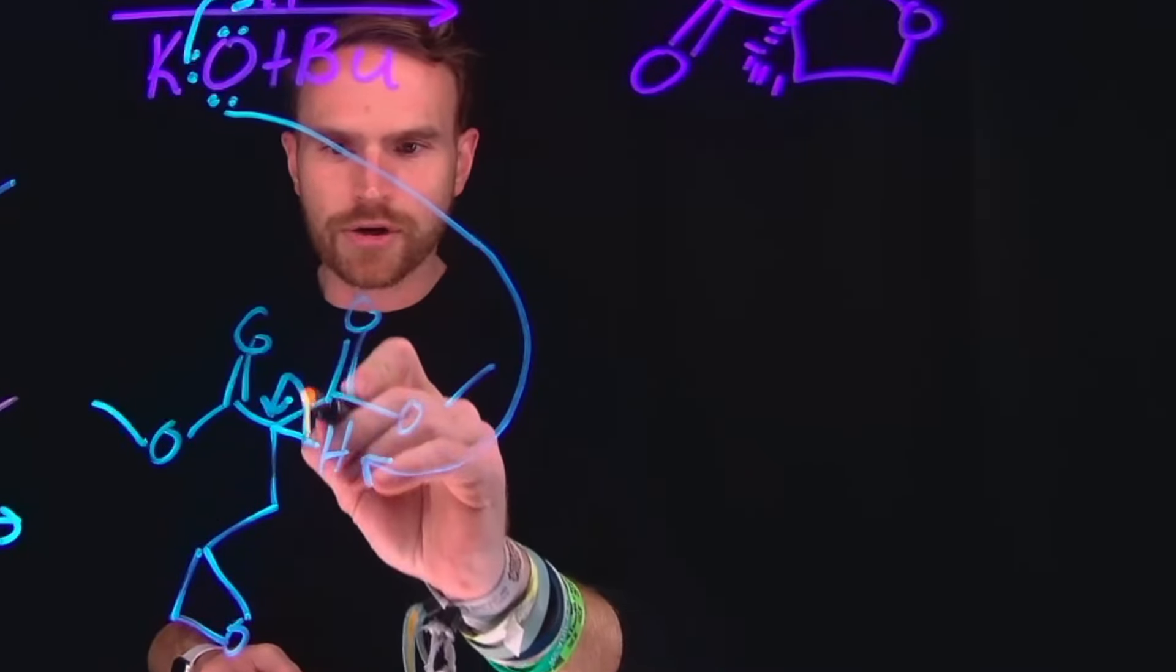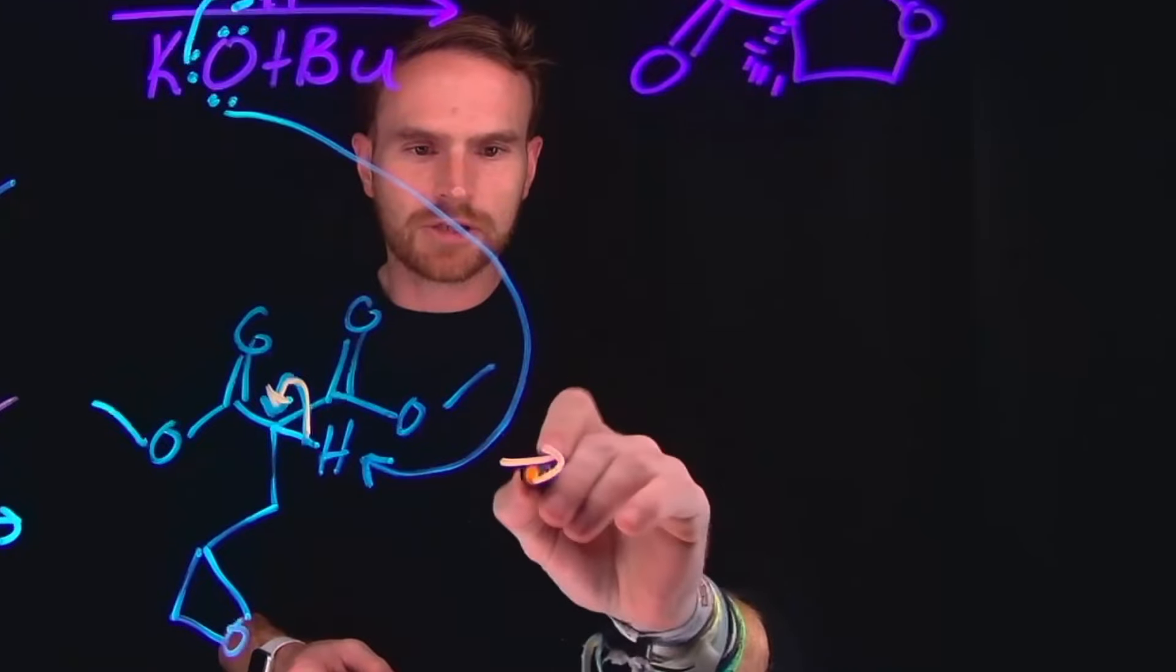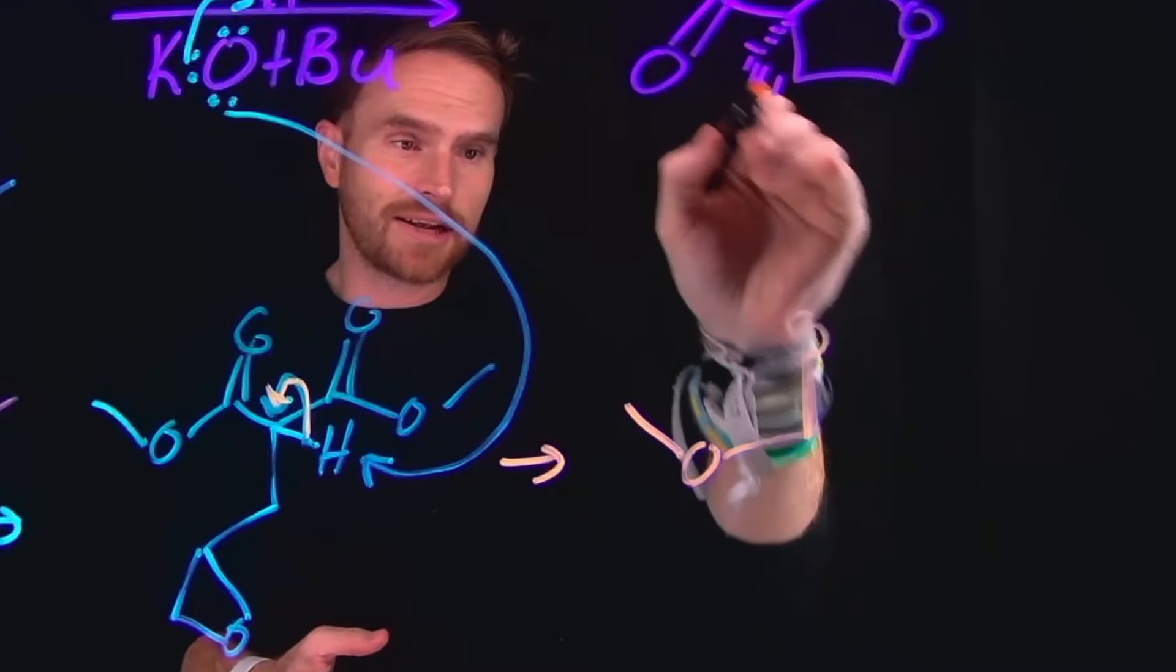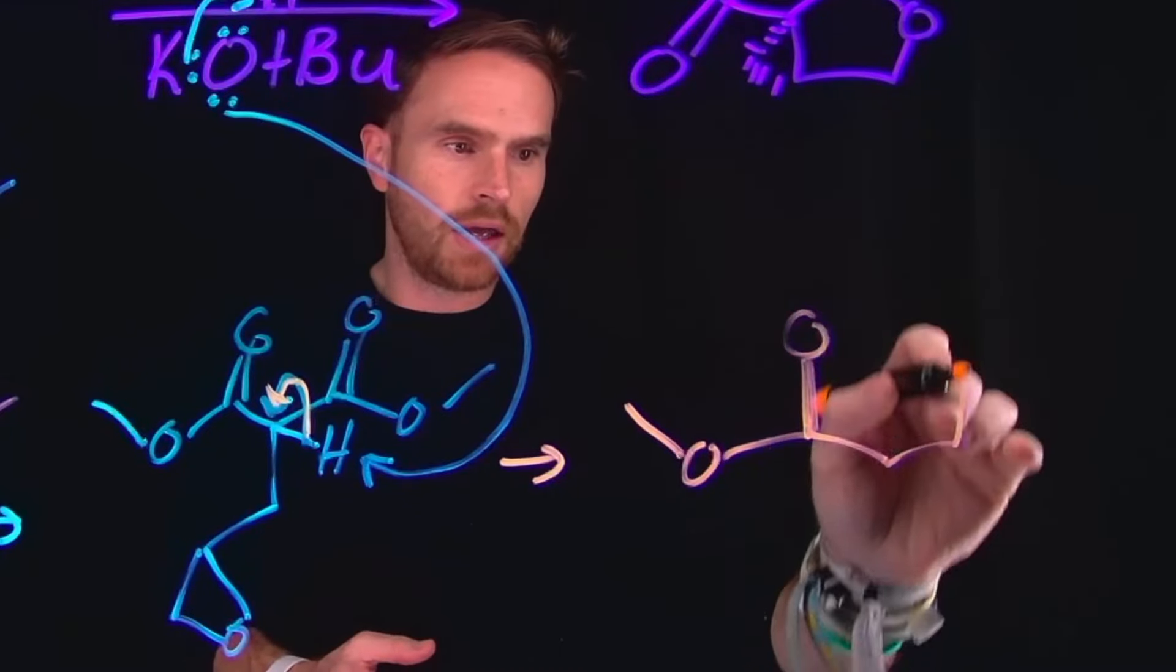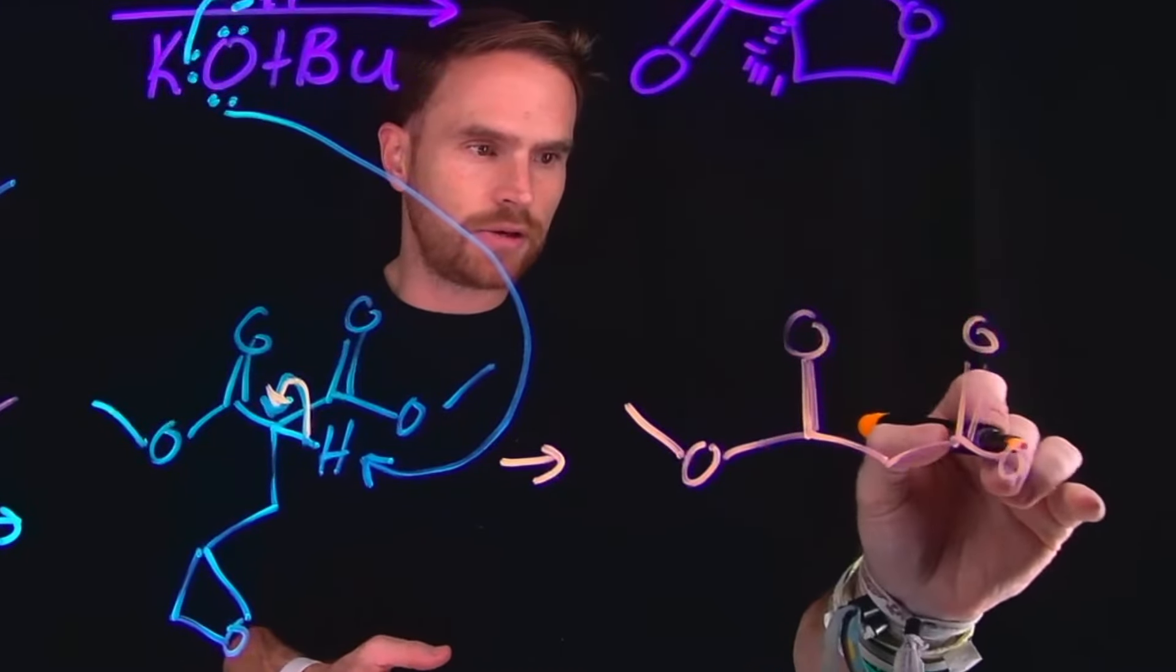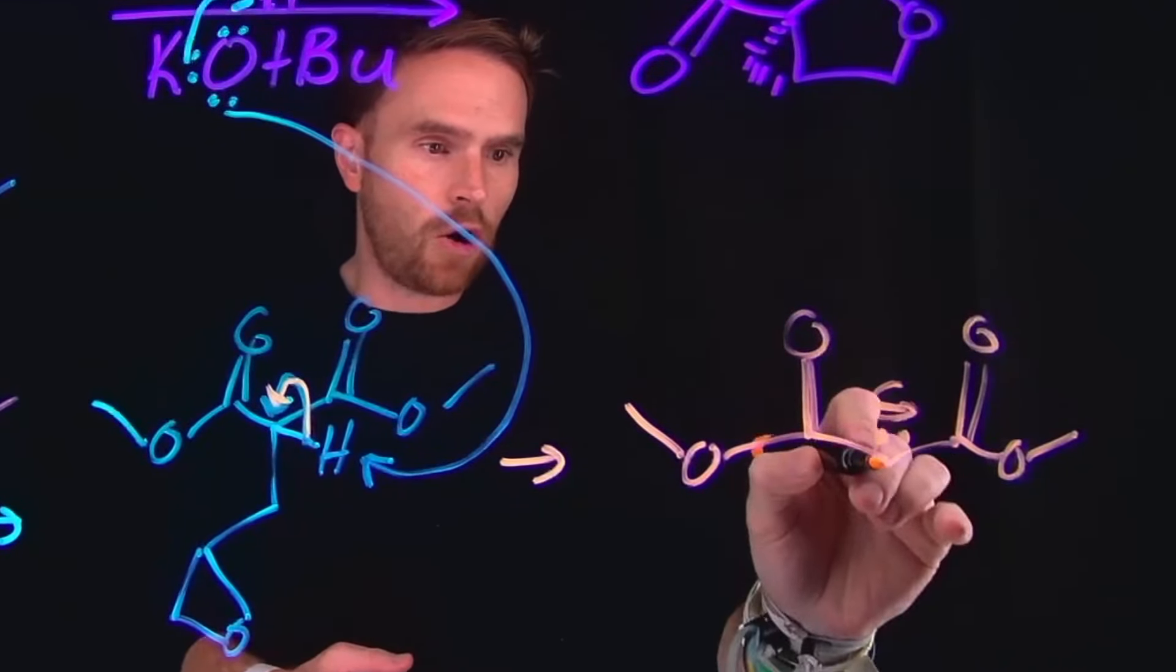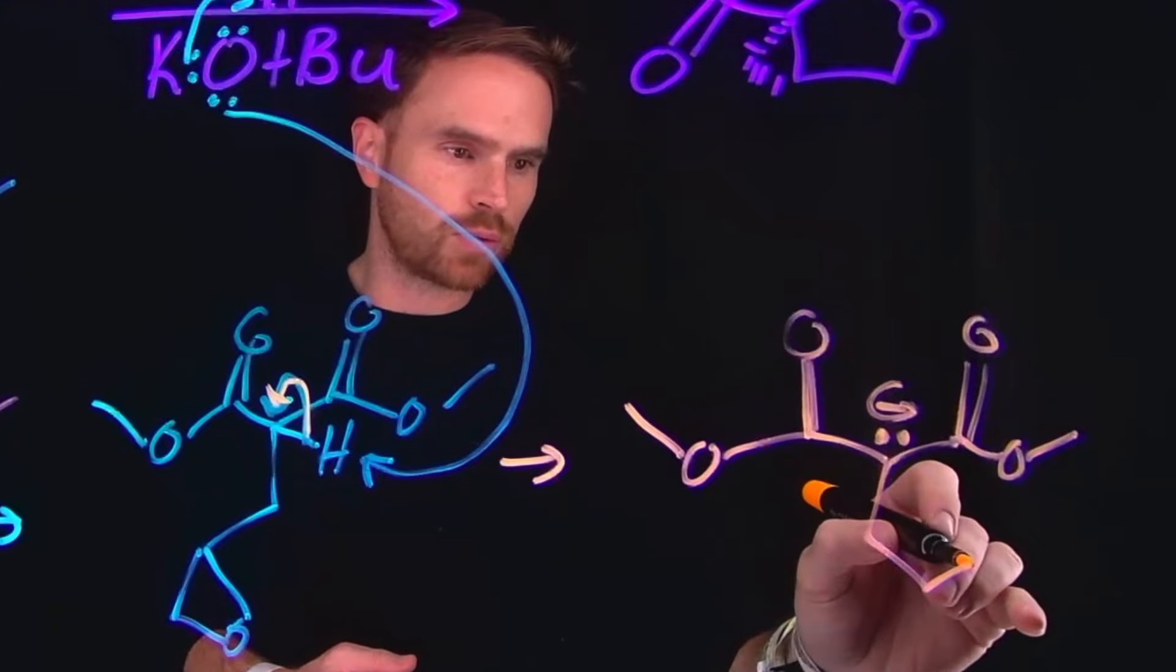This is the key step where you form this enolate that subsequently produces a product. Now hopefully you can start to see where we're getting this cyclopropyl group which is being formed. Importantly, we now have a nucleophilic carbon at this position which can come and open that epoxide ring which we formed previously.